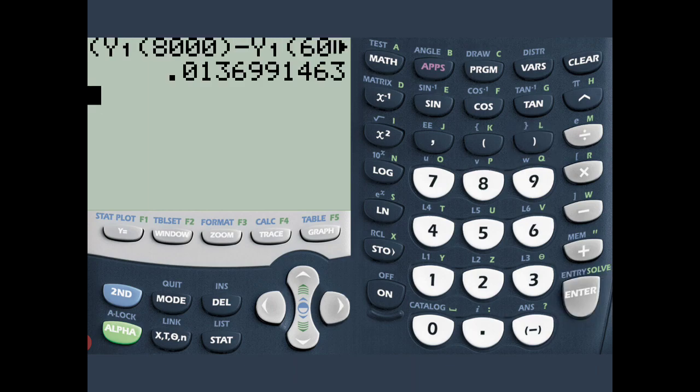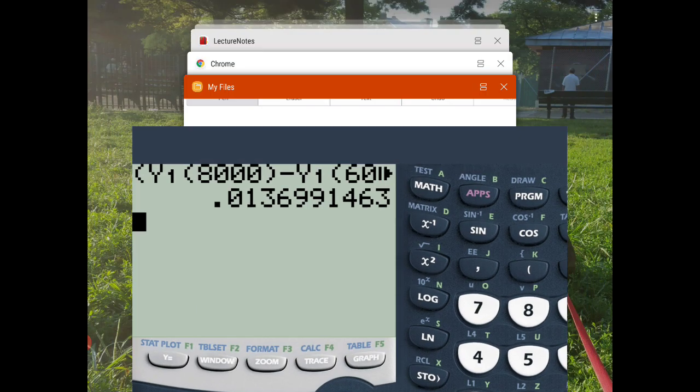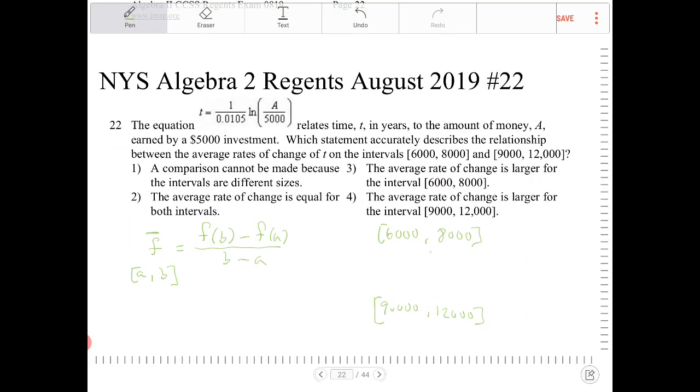So the average rate of change will be 0.01369 or 0.014. The average rate of change is going to be 0.014 years.